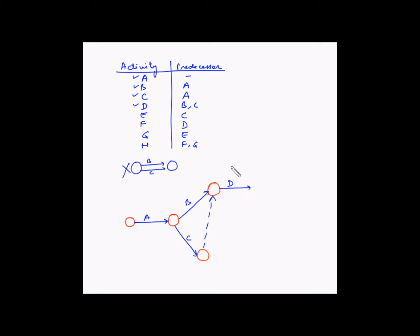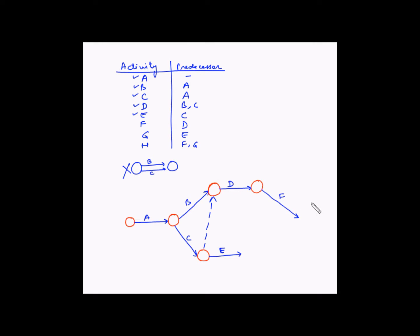Next is activity E which is dependent on the completion of C. So let's draw that — this is E. So we have completed E. Next is F which is dependent on D. So we have completed F.